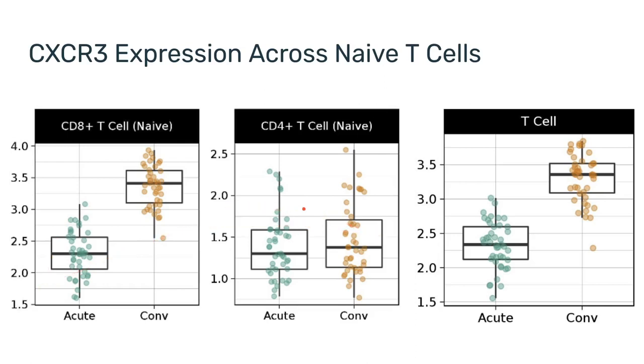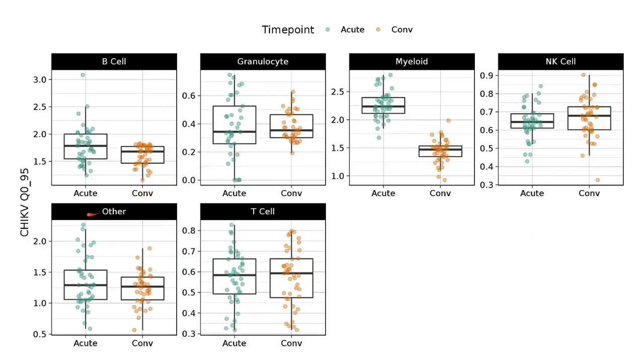The interesting part is that we found it using differential expression analysis. And another interesting trend is this panel includes CHIKV, which is a marker for the chikungunya virus itself. In other words, cells that are infected with chikungunya express this marker, and you will notice that it starts high for the myeloid compartment and then goes down. One of the hypotheses that came from this study is that the chikungunya virus infects monocytes, and the decrease here at the convalescent time point confirms that the infection has subsided.